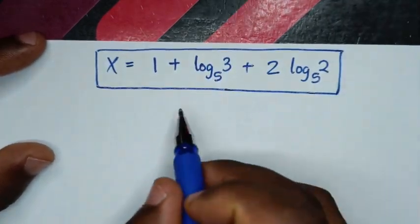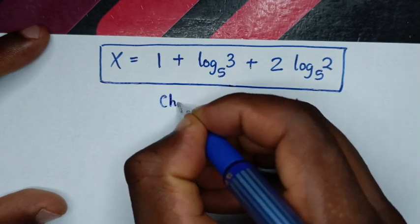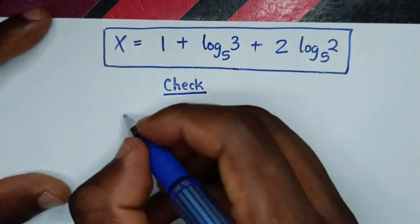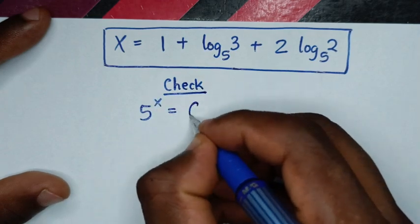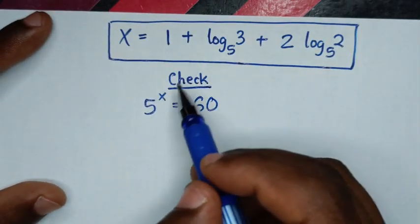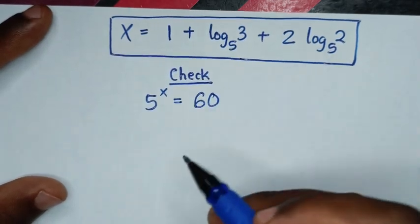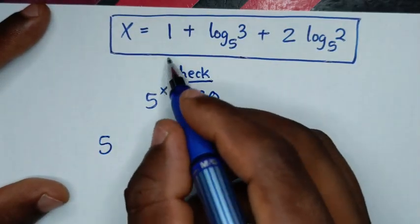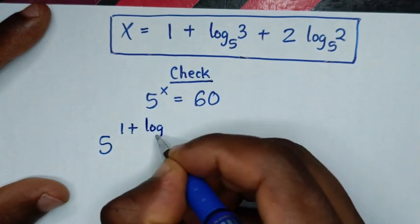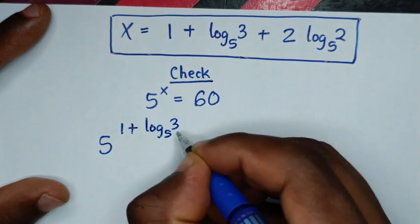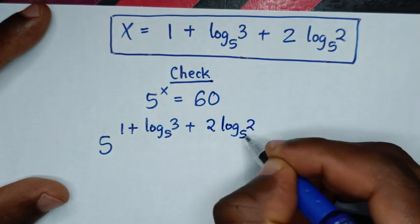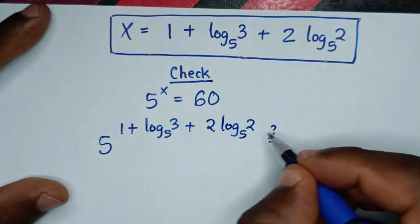Now let's check this answer if it is correct. To check, from our problem which is 5 power of x is equal to 60, we'll substitute into here. So it will be 5 to the power of 1 plus log base 5 of 3 plus 2 log base 5 of 5, and verify it equals 60.